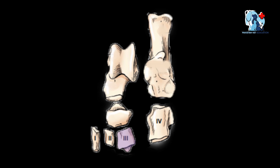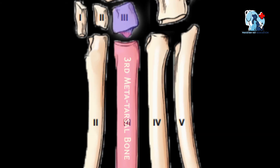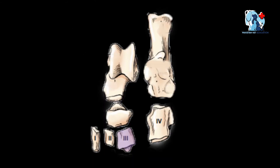The third tarsal bone is also wedge-shaped. Proximally it articulates with the central tarsal bone, distally with the third metatarsal bone, medially with the second, and laterally it articulates with the fourth tarsal bone.